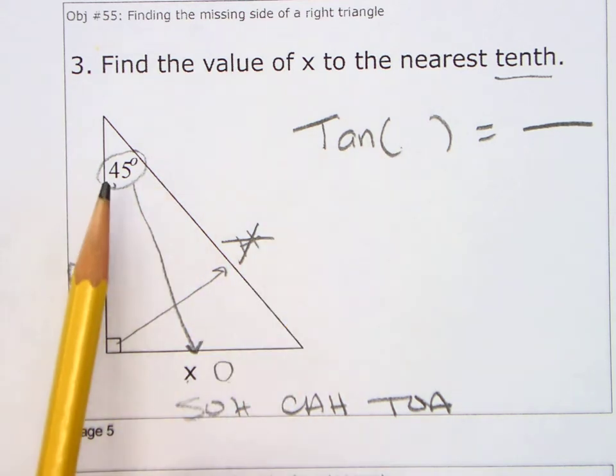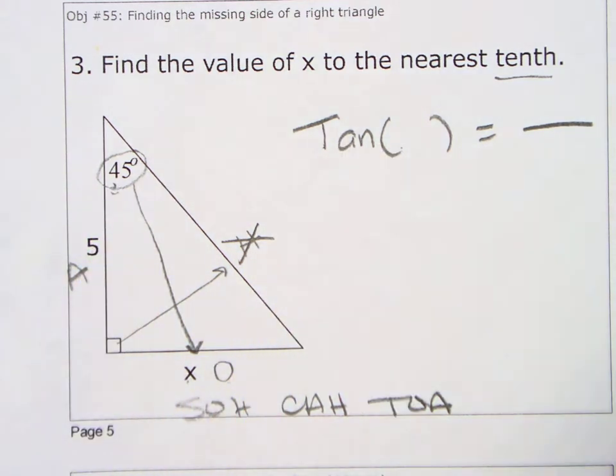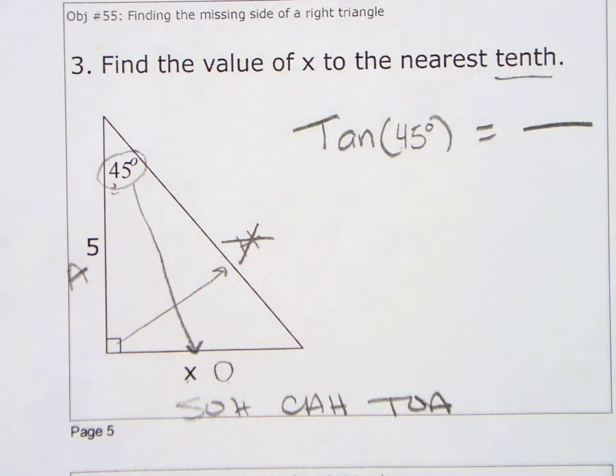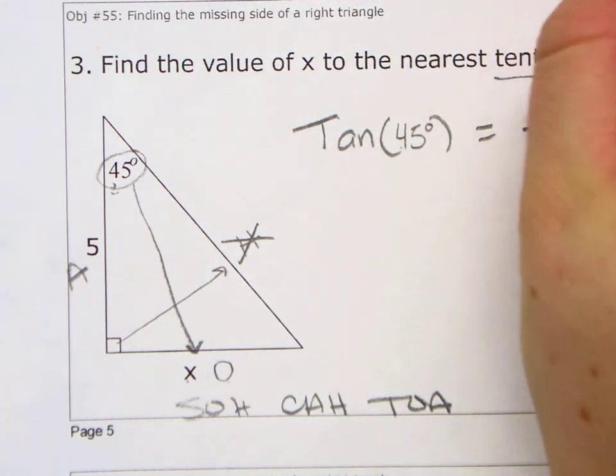Inside the triangle, inside the parentheses. Inside the triangle, inside the parentheses. It's tan of an angle equals opposite over adjacent.